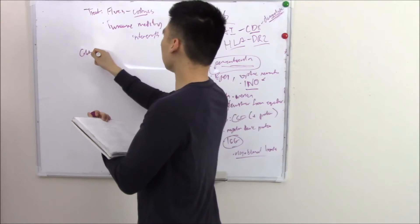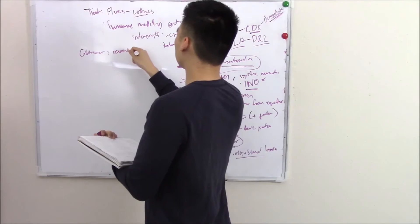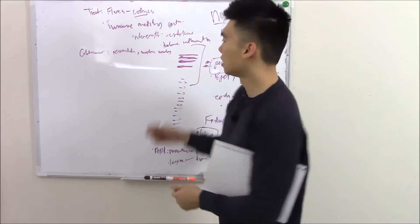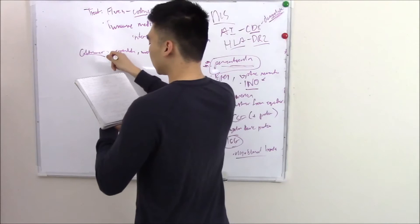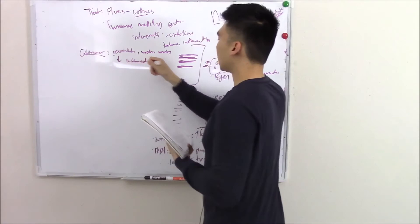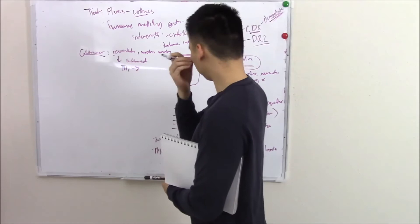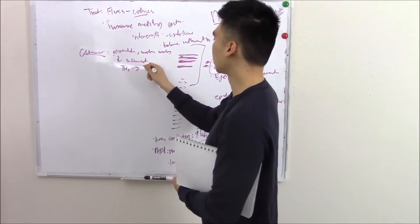You have something called glatiramer, and this basically resembles myelin basic protein—a myelin analog. So it acts as a decoy, and things can attack your glatiramer instead of your actual myelin. This can tone down inflammation and can also turn these attacking T-cells, especially TH1 cells, to the more indolent, more helper-like, less inflammatory TH2.